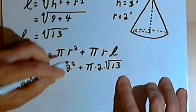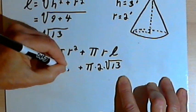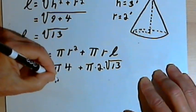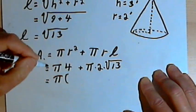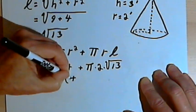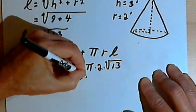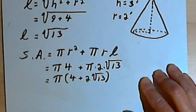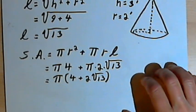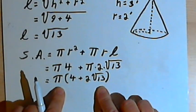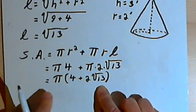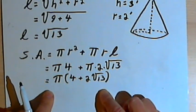I'm just going to take that 2 squared and make it a 4. And now I can rearrange this a little bit and call that pi times the expression 4 plus 2 times the square root of 13. And once again, you can put this into your calculator and find out fairly specifically what the surface area of the cone is going to be.